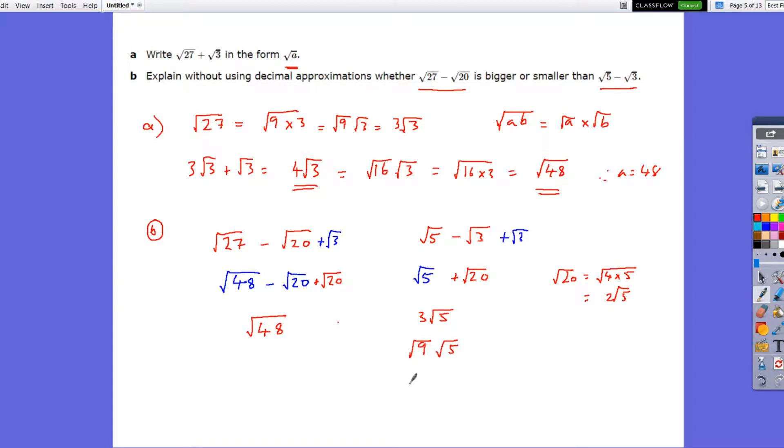And then 9 times 5, put it under one root symbol. So that will give me root 45. On this side, I've got root 48.